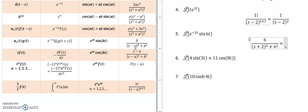And so if we simplify this a little, we get 6 over s plus 2 quantity squared plus 36.